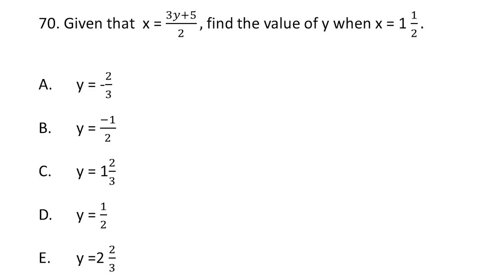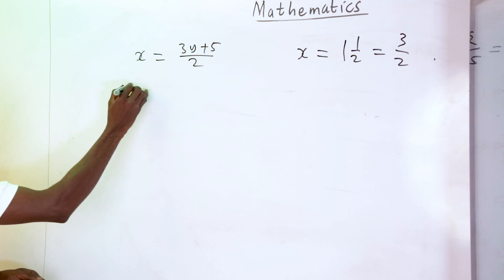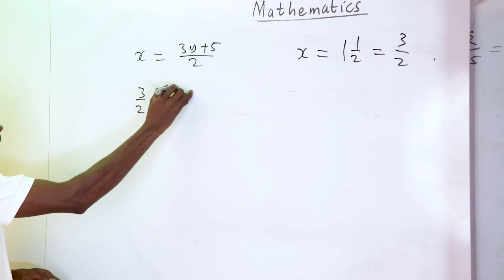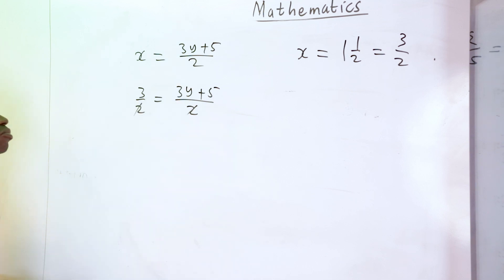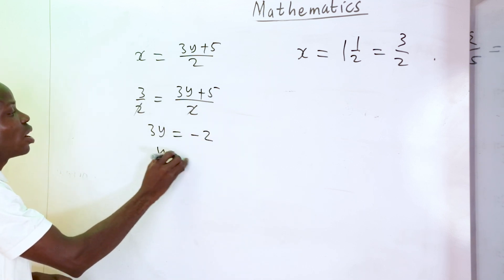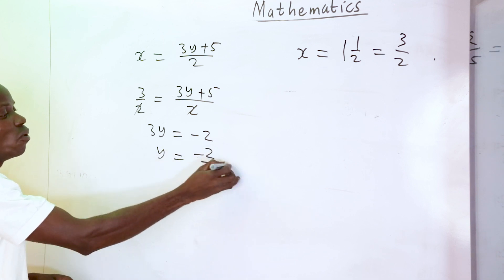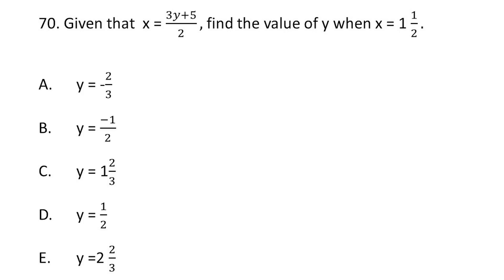Number 70: given x equals (3Y plus 5) over 2 and x equals 1 and 1/2 (which is 3/2), substituting gives 3/2 equals (3Y plus 5) over 2. The 2s cancel, so 3Y equals minus 2, giving Y equals minus 2 over 3. The correct option is A.